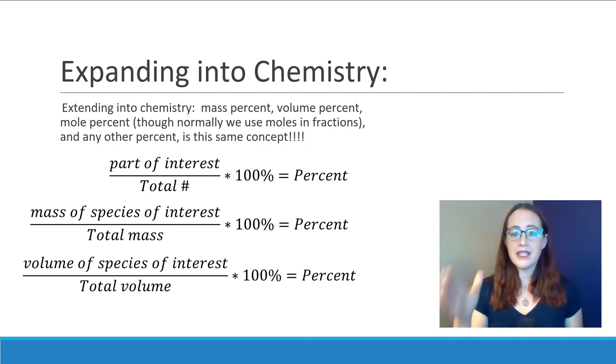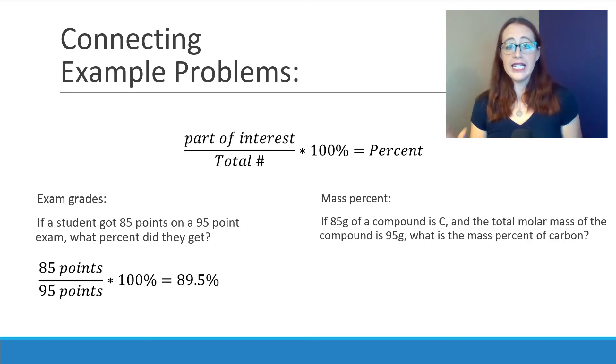Now, I'm going to do these problems side by side with the exam questions that we started the video with in order to draw attention to that connection, to draw attention to how they're the same problem. Keeping in mind that we are connecting our chemistry topics to our math concepts, we are going to solve what is almost the identical problem. So, when we solved this for exam grades, we said we had 85 points out of a 95-point exam, and we asked what percentage did they get.